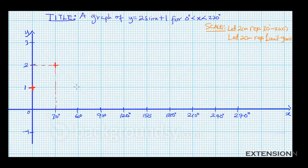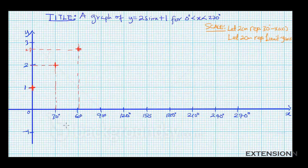When x is 60, y is 2.7. One dot here represents 0.1, so count up: 2.1, 2.2, 2.3, 2.4, 2.5, 2.6, 2.7 — mark that point. From 0 to 30 degrees there are 10 small boxes representing 2 centimeters, so let 2 centimeters represent 30 degrees on the x-axis and 2 centimeters represent 1 unit on the y-axis.